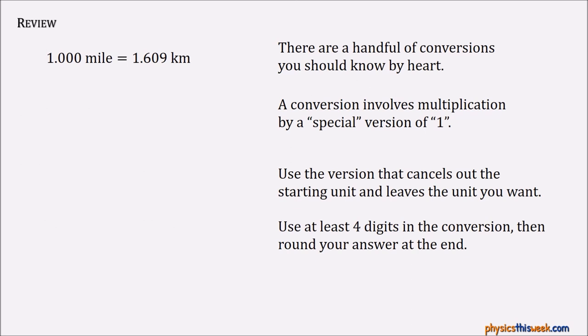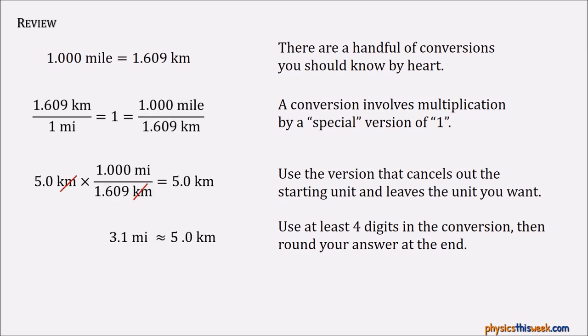So as a quick review, there are a handful of conversions you really should know by heart. Most of the other ones you can look up as necessary. When you're doing these conversions, they involve a special version of one where you take one side divided by the other. As long as you divide both sides by the same thing, you get one. Then you multiply that one, and you want to put it in such that the units you're trying to get rid of actually cancel out. You should use at least four digits in your conversion, and then round your answer at the end.